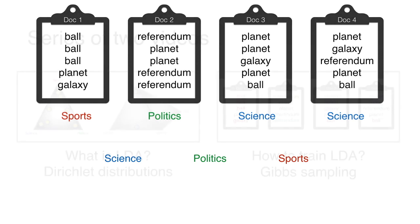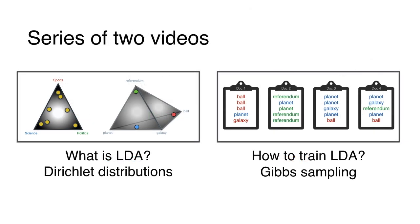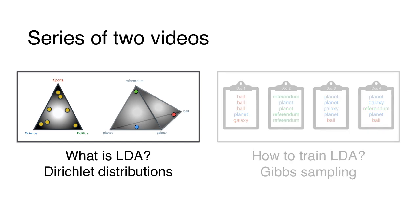This is the first of a series of two videos. In the first video, I'll tell you what LDA is, including that middle word Dirichlet, which refers to a distribution. In the second one, we'll go through an example and I'll tell you how to train an LDA model using a method called Gibbs sampling. So let's get started with Latent Dirichlet Allocation.